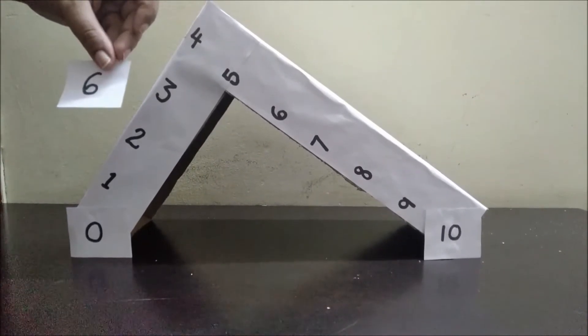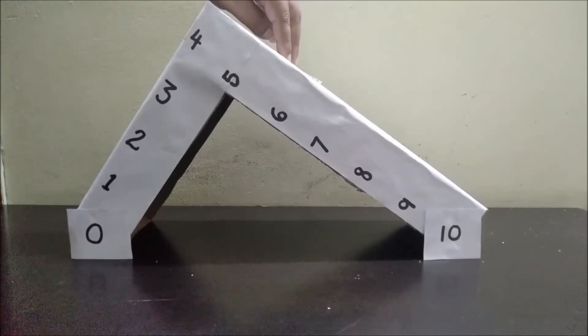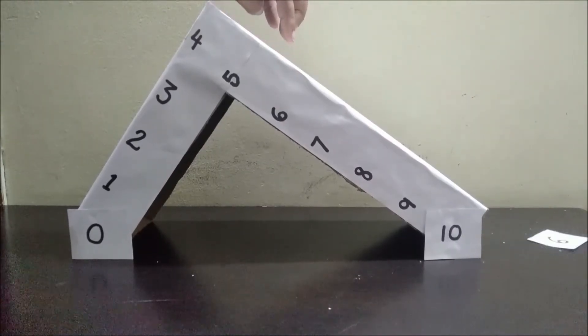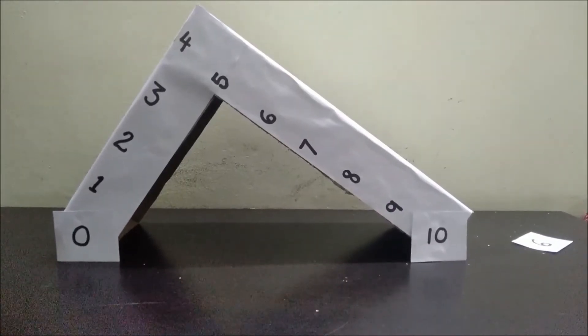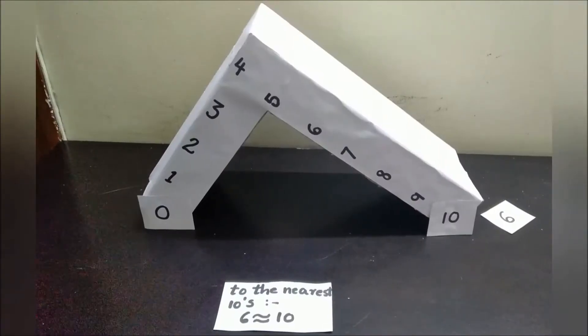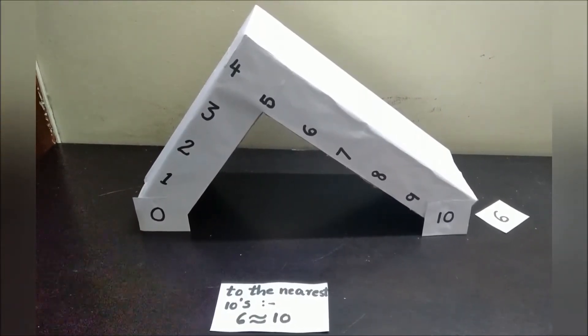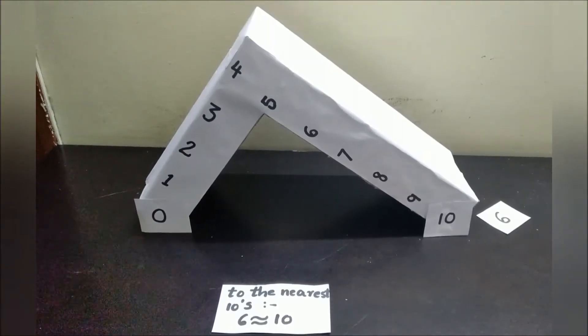Let's try to round off a one-digit number to the nearest tens using this slide. Let's round off number 6. I am keeping this 6 on the slide. Which side will it slide? It goes towards 10. It shows that when we round off 6 to the nearest tens, it becomes 10. That means 6 is approximately equal to 10.